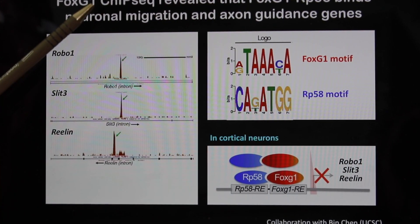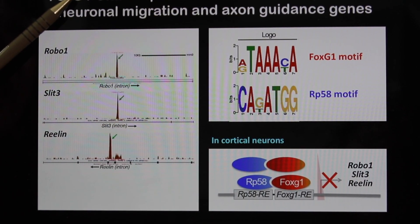We also looked at FOXG1 conditional heterozygote brains, asking what happens if you lose just one copy of FOXG1 only in neurons. In this case, corpus callosum forms, but it is not normal. To understand where FOXG1 is binding and who its partner is, we used ChIP-seq analysis to look for where FOXG1 binds in the mouse genome. We found two DNA signature motifs: the binding site for FOXG1 and the binding site for RP58. These two proteins go together, binding to genomic regions that have sites for both. Remarkably, the genes they bind together control neuronal migration and axon guidance — truly critical genes to build the corpus callosum bridge.